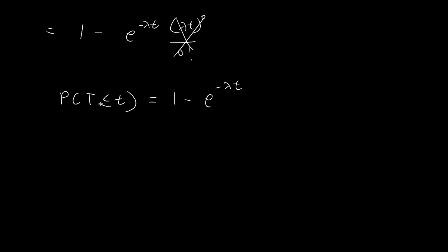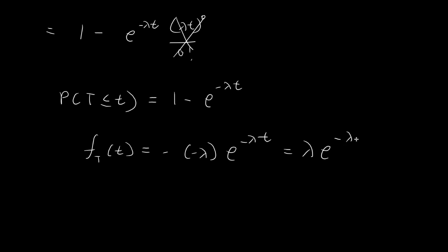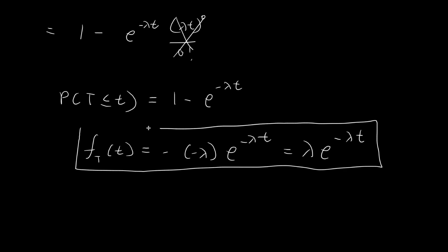This expression is actually just the cumulative distribution function of the random variable capital T. If we differentiate this with respect to t, we get back the probability density function. Differentiating the right-hand side using the chain rule gives us negative times negative λe^{-λt}, which simplifies to λe^{-λt}. That's how we derive the PDF of capital T, and we can see that it is exactly the exponential distribution.